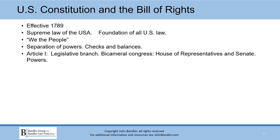Article 1 establishes the legislative branch. They make the laws. It provides for a bicameral Congress. Bicameral means two houses. One house is the House of Representatives and the other house is the Senate. And Article 1 establishes the powers of the legislative branch.